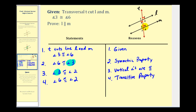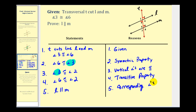And if we know that angle six and angle two are congruent, these are corresponding angles, and therefore the lines are parallel from the corresponding angles converse postulate. This is one possible proof that if we have a transversal that cuts two lines and the alternate interior angles are congruent, the two lines would be parallel. I hope you found this helpful.